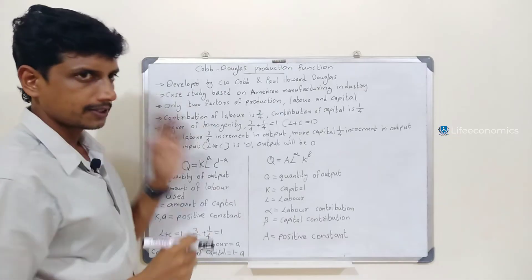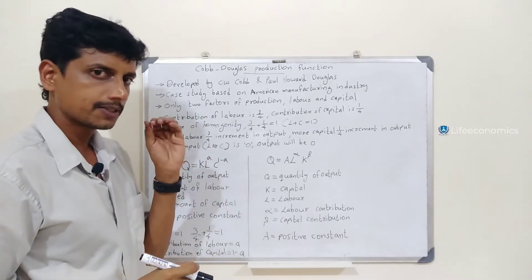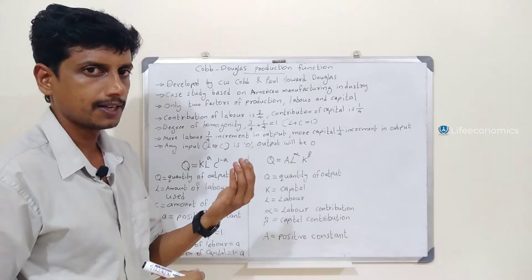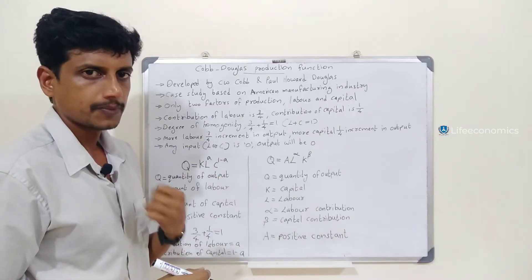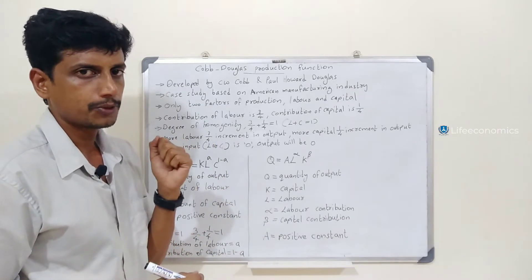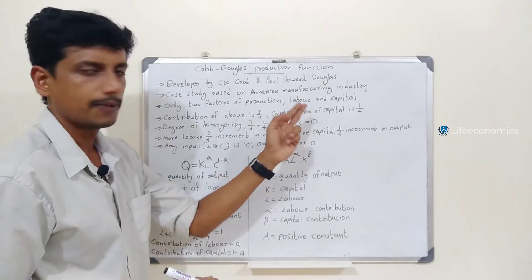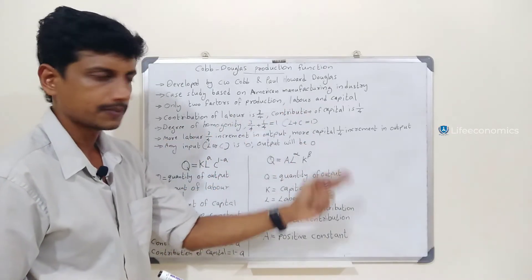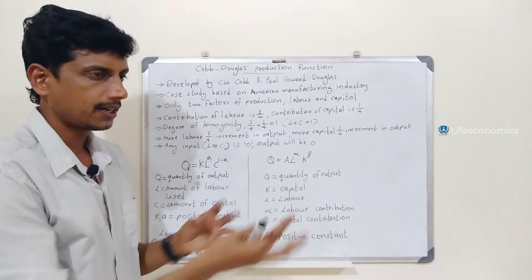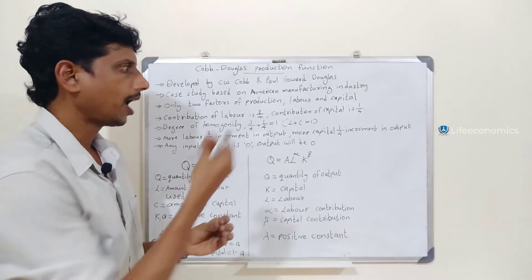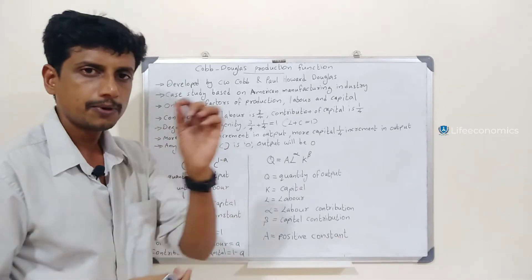In the Cobb-Douglas production function, only two factors of production are considered. Although we generally have land, labor, capital, and entrepreneur, here there are only two factors of production: labor and capital.